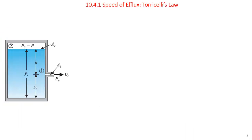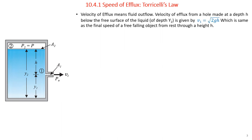Speed of efflux: the word efflux means fluid outflow. Torricelli discovered that the speed of efflux from an open tank is given by a formula identical to that of a freely falling body. The velocity of efflux from a hole made at depth h below the free surface of the liquid is v₁ = √(2gh), where h is the height and g is the acceleration due to gravity — the same as the speed of a falling object from rest through height h.